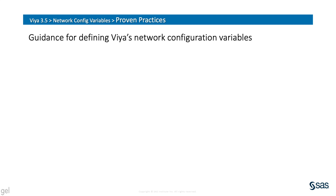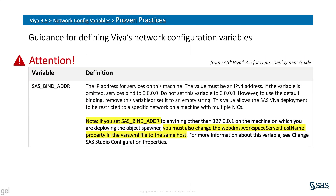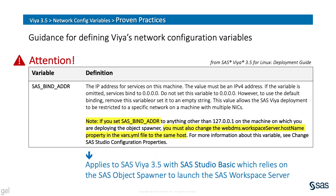Let me share some proven practices to help guide your experience with network configuration in Viya 3.5. First, if you're using SAS Studio Basic software, there is a pre-installation configuration you need to make. The SAS Viya 3.5 for Linux deployment guide explains that you must define the webdms.workspaceserver.hostname property in the SAS Viya playbook's vars.yaml file to match the effective value of SAS_BIND_ADDR. This only applies to sites using SAS Studio Basic components like the SAS Object Spawner and SAS Workspace Server, and not SAS Studio Enterprise software which relies on different Viya services for that functionality.